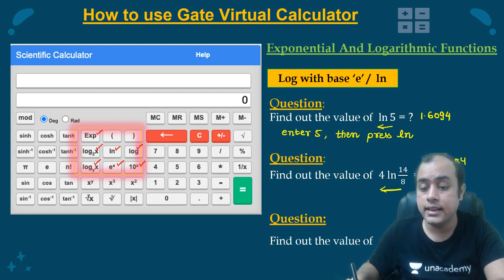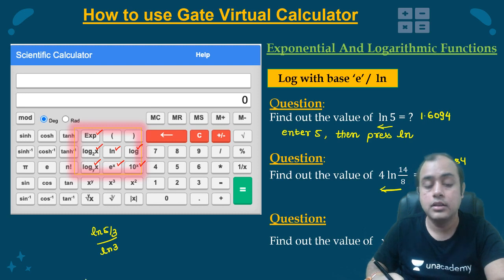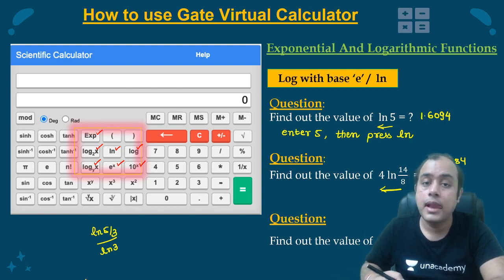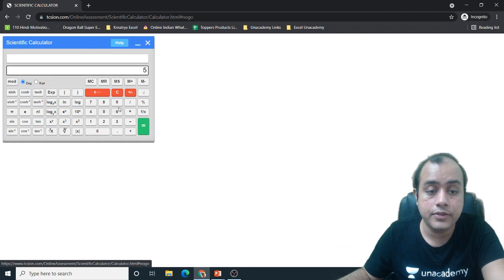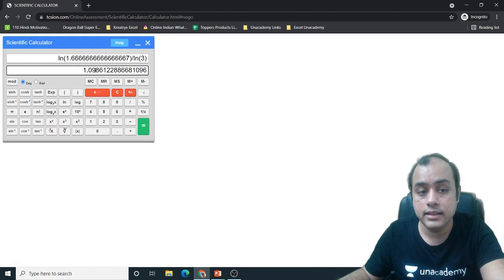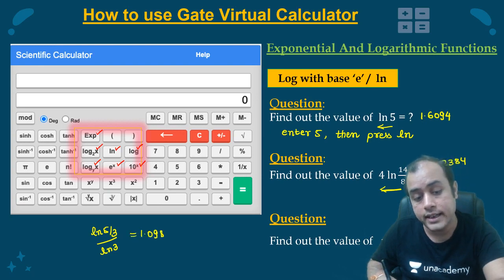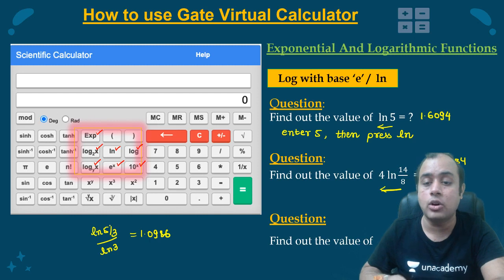Now next it is asking us to find out log of 5 by 3 divided by log of 3. So what you have to do? You have to first find out log of 5 by 3. Again first 5 by 3 then log. 5 by 3 equal to then log, divided by 3 log. So see 1.0986. So it is 1.0986. So what I did is first I fed 5 by 3 into the calculator, I evaluated log of it, then I divided it by log of 3.